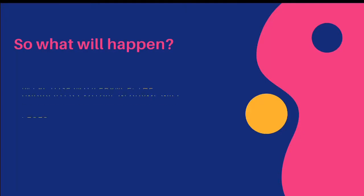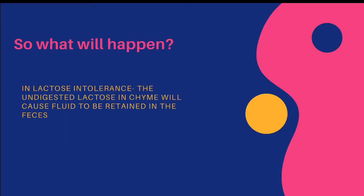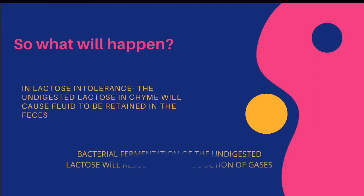In lactose intolerance, there will be undigested lactose in the chyme — the food content that passes from the stomach into the small intestine. Because lactase is reduced or absent, the lactose remains undigested. This causes fluid to be retained in the feces. The undigested lactose then gets fermented by bacteria, producing gases.